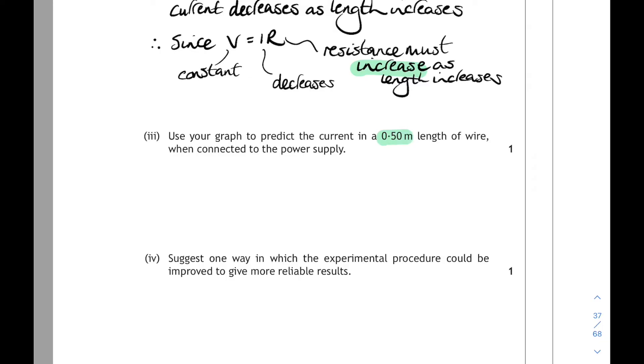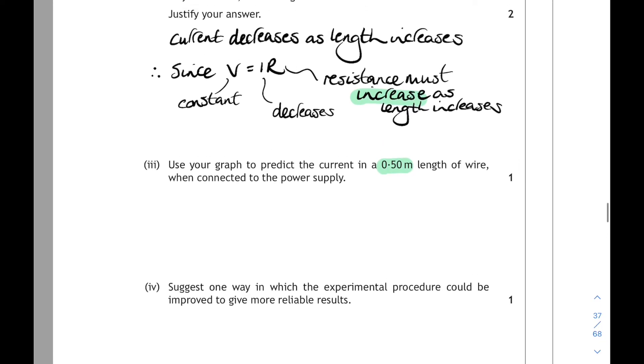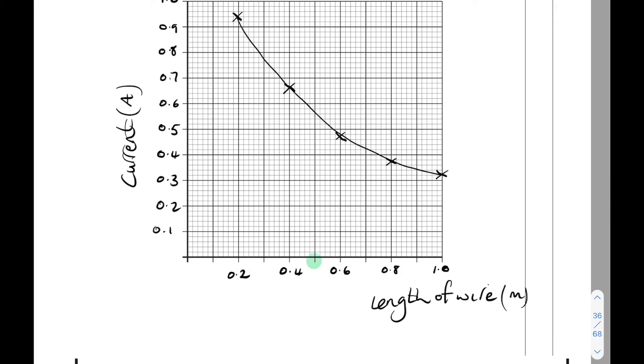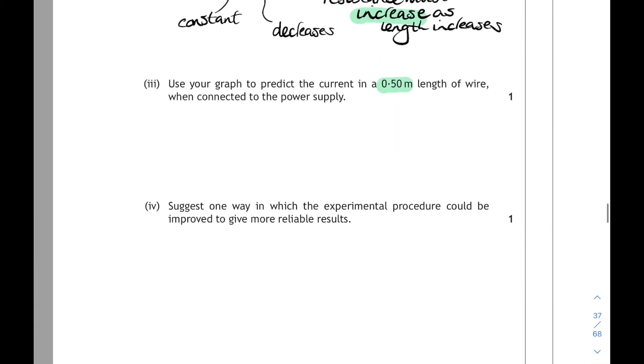Then use the graph. We have to make a prediction of what the current will be when the length of the wire is 0.5 meters. There's 0.5 meters, there's where it cuts the graph, and that is about 0.56 amps. Make sure you write that in the space that's provided in the answer booklet, 0.56 amps.